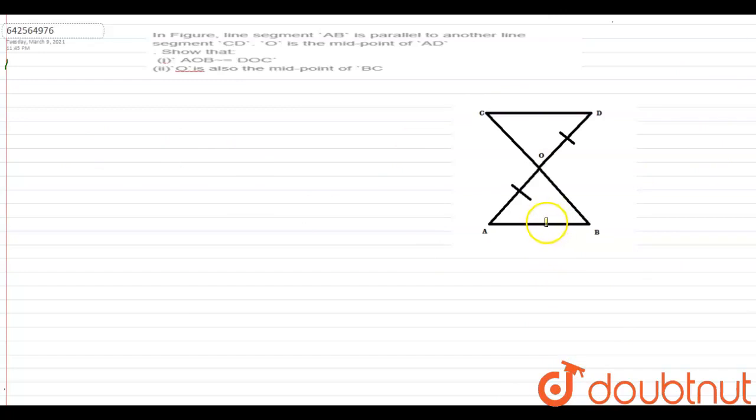It has been given that AB is parallel to CD and O is the midpoint of line AD. What we need to prove is that triangle AOB is congruent to triangle DOC. So let's start with the solution.